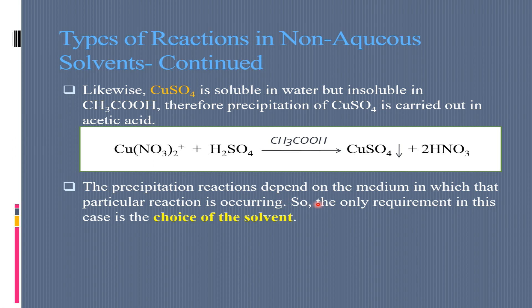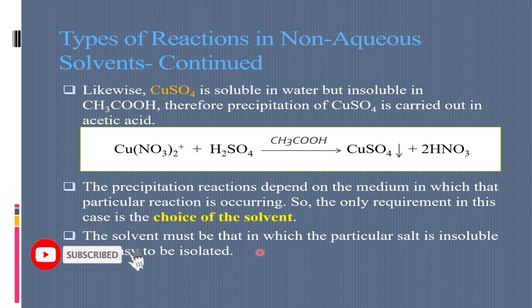The precipitation reactions depend on the medium in which that particular reaction is occurring. So, the only requirement in this case is the choice of solvent. The precipitation reaction is very important and this is why we have previous knowledge required. The reactants are available, and the products are available. Then, we have the solvent choice. We have the product that has to be insoluble. The solvent must be that in which the particular salt is insoluble and easy to be isolated.